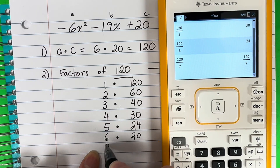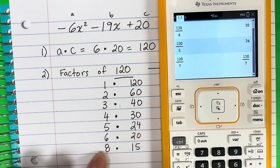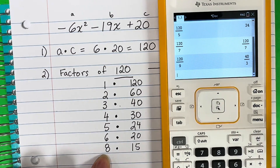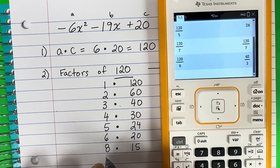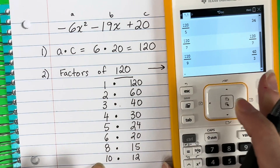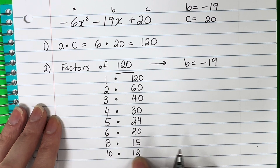8 times 15 is 120, so 8 works. 9 does not work — 120 divided by 9 is a fraction. 10 times 12 is 120. 11 does not work. And you stop at 12 because after that you'd just be repeating pairs you've already listed.